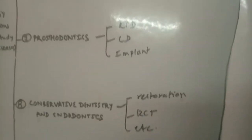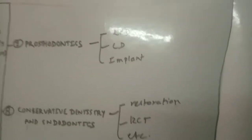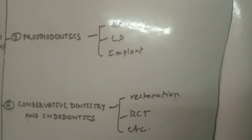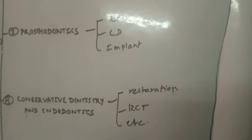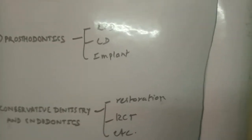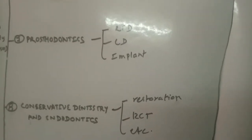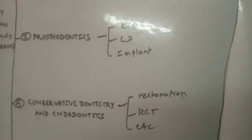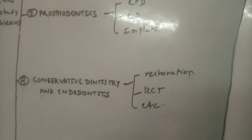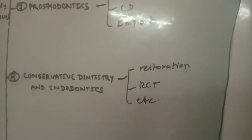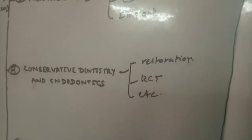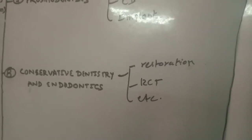Prosthodontics covers removable partial denture placement, complete denture placement, and implant placement. The eighth important branch of dentistry is conservative dentistry and endodontics.